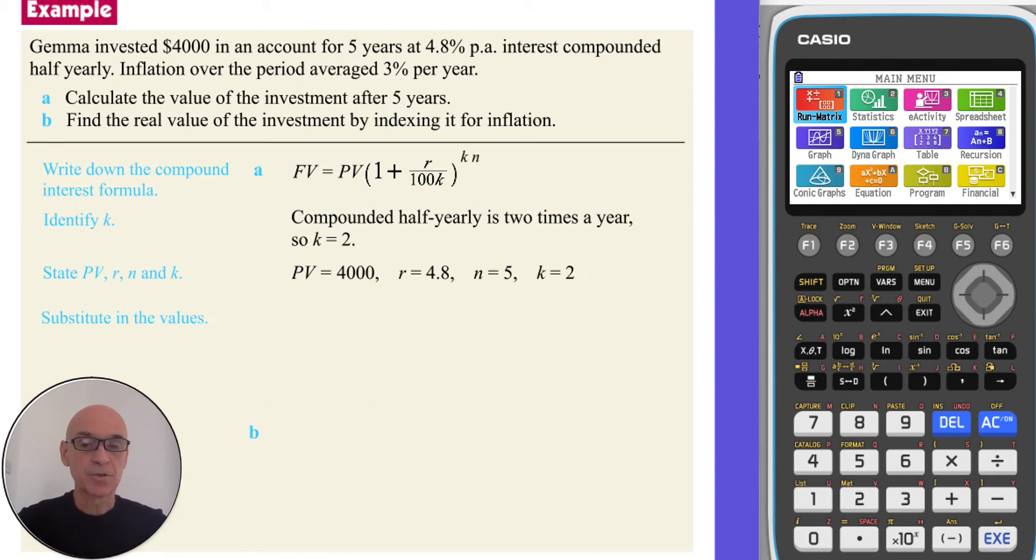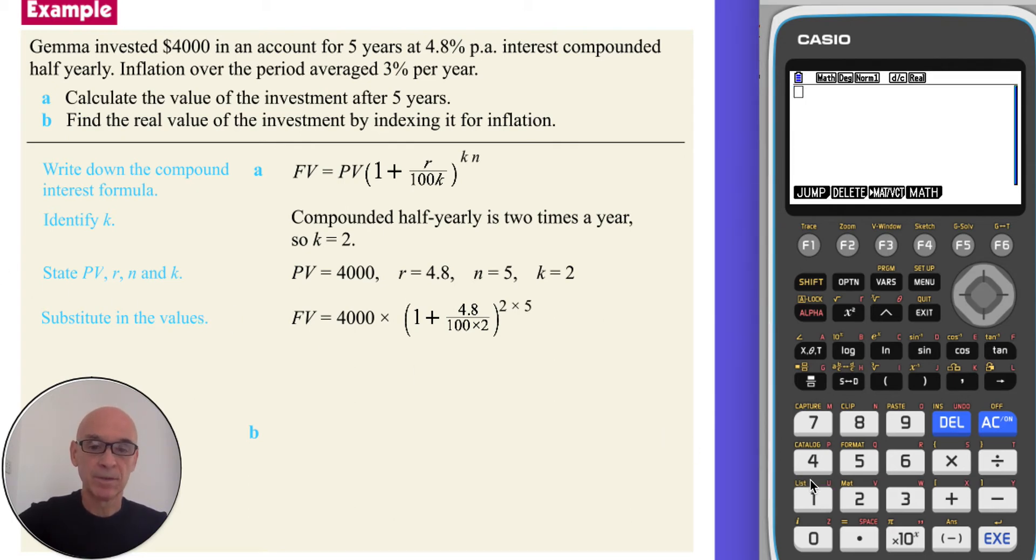We then substitute these values into the formula and enter the calculation into the calculator. So we select the run matrix option, number one, and type in the present value, that's 4000 multiplied by, in the open bracket, 1 plus, and I use the fraction button, putting interest rate on the top, scrolling down to put 100 multiplied by 2, or we can just put 200 on the bottom,